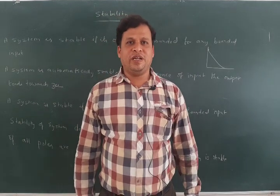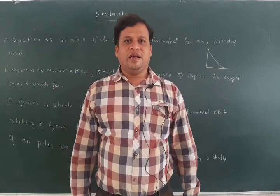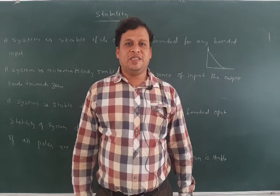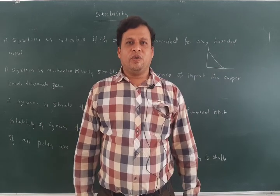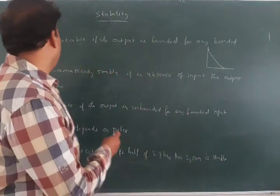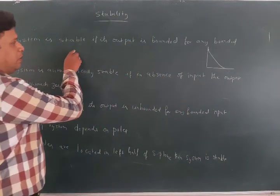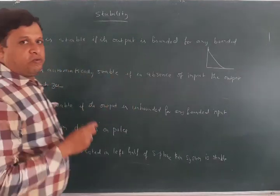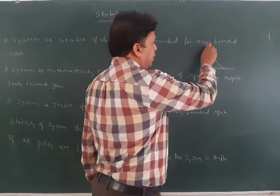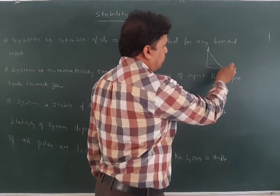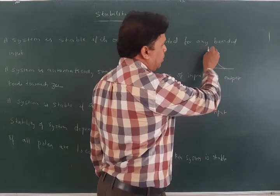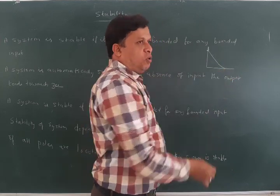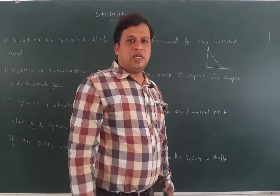In today's class we are going to study about the topic called stability — how a system is stable, marginally stable, and unstable. A system is stable if its output is bounded for any bounded input. For example, if you see this graph, it has some maximum value and some minimum value, so it is a bounded one — bounded output and bounded input — and this system is called a stable system.